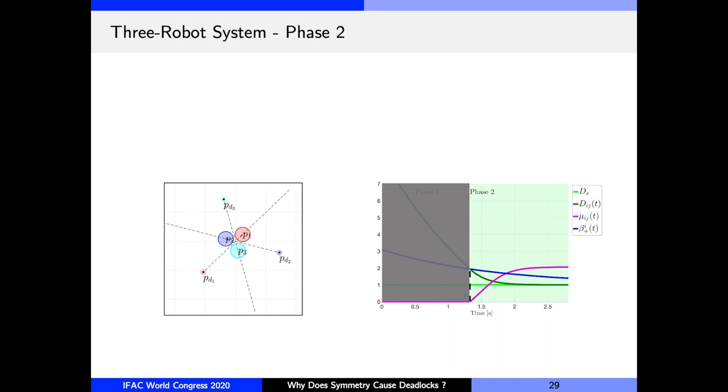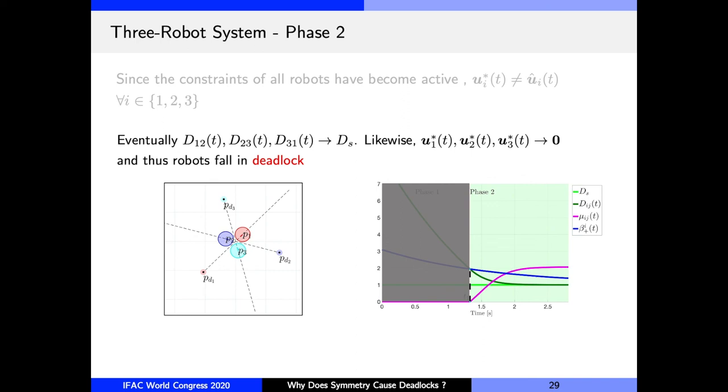Finally, robots enter phase three, where all constraints of each robot are active. The distance between robots exponentially converges to the safety margin d_s, and the optimal controls converge to zero, which means that the robots come to a stop, and hence have fallen in deadlock. With this, we have concluded the proof for the three robot case.